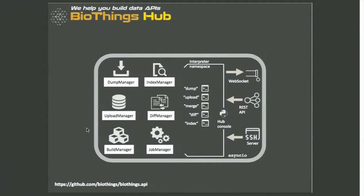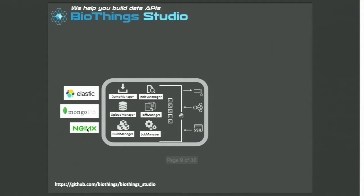Behind this process, we have a common backend system written in Python that we call the Hub. It allows you to control and automate this whole process using predefined commands. That Hub can be found at the very core of the Biosync Studio, which is like a pre-configured environment providing everything you need to run the Hub and all of its dependencies.